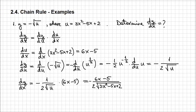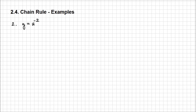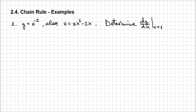Let's consider one more example in which we apply the chain rule using the Leibniz notation. This time I'm going to consider y equal to u to the power minus 2, where u equals 3x squared minus 2x. What we're going to determine is the value of dy/dx when x equals 1. The approach is going to be exactly the same as before — in Leibniz notation, dy/dx equals the product dy/du times du/dx.